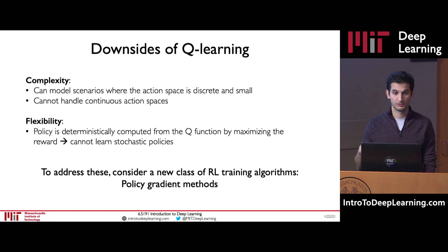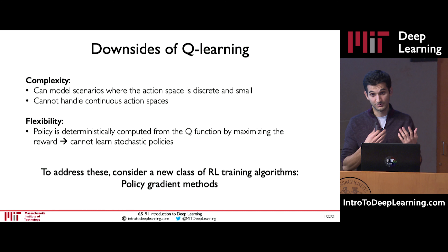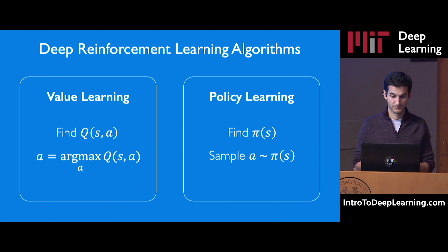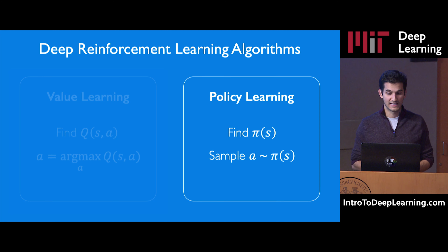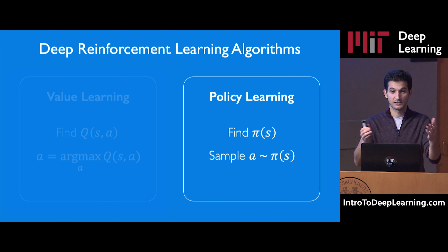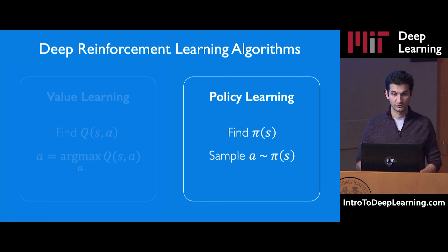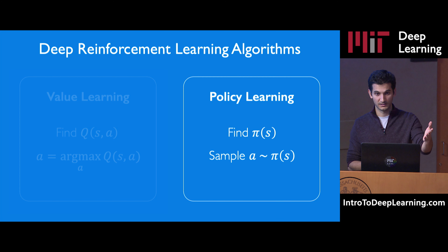To address both of these issues, we now consider a different class of reinforcement learning algorithms called policy gradient methods. As a recap: value learning tries to first learn the Q function and extract actions by maximizing it. In policy learning, we directly learn the policy that governs our action-taking steps. If we have that policy function — a function taking a state and outputting an action — we can simply sample from that function: give it a state and it returns an action.